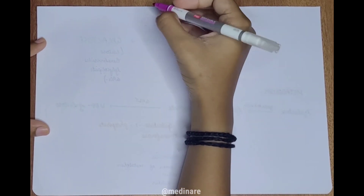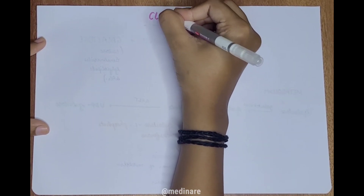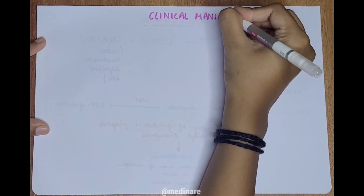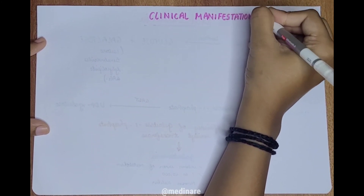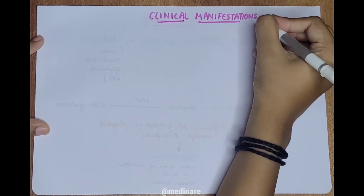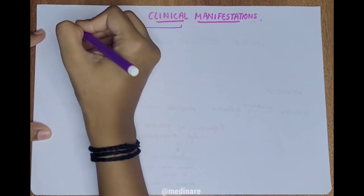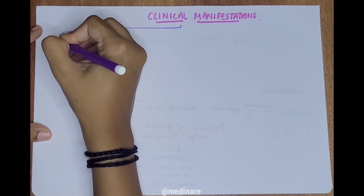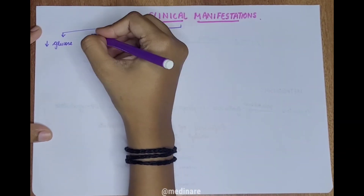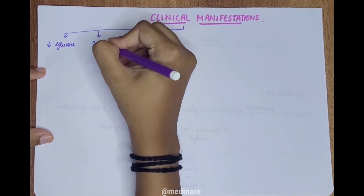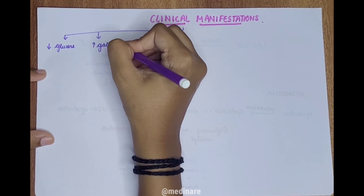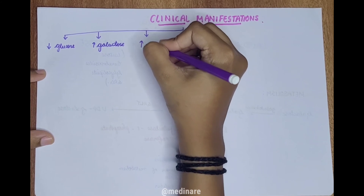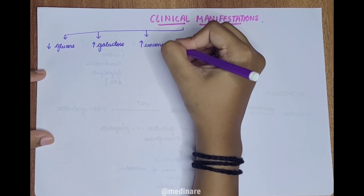Now let's discuss the clinical manifestations associated with galactosemia. The deficiency of the enzyme galactose-1-phosphate uridyl transferase leads to decreased blood glucose levels, increased levels of galactose, and elevated levels of unconjugated bilirubin in the blood.